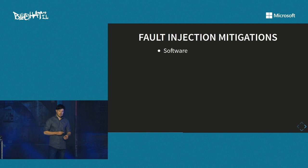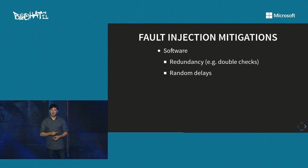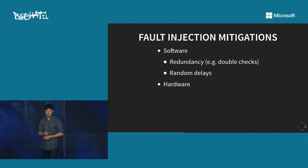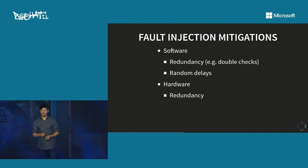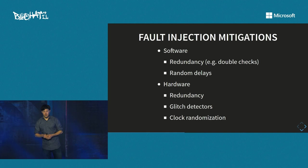How could we mitigate fault injection? For software: add redundancy by checking the hash value twice, and only boot if both checks match. Adding random delays makes it harder to pinpoint the exact moment in time when you need to introduce a glitch, especially when combined with double checks. For hardware: add redundancy, use checksums, add glitch detectors such as light sensors to detect laser illumination on the die, or measure voltage to ensure no one is playing with it. You can also add non-constant timing using clock randomization to make it harder to pinpoint the exact glitch moment.